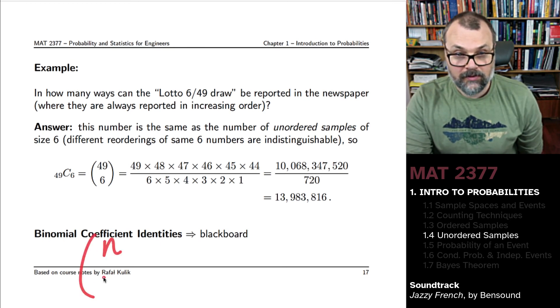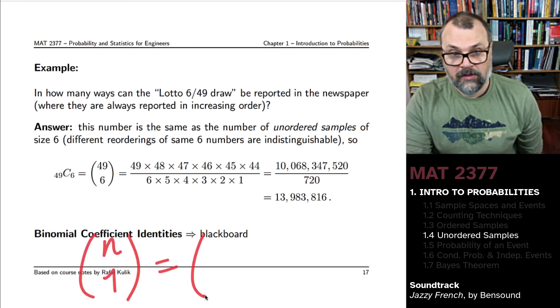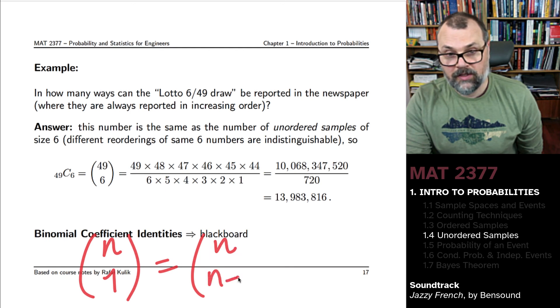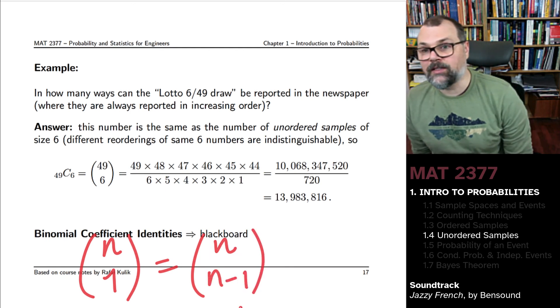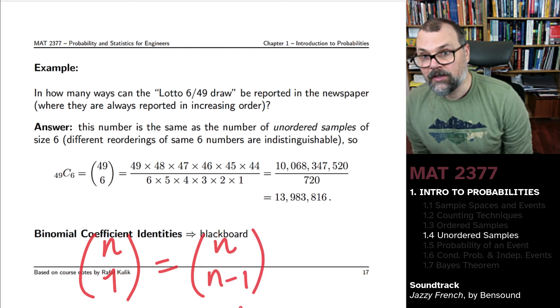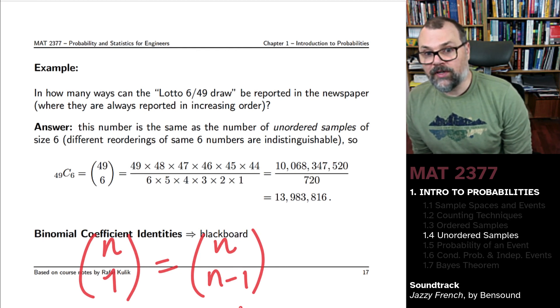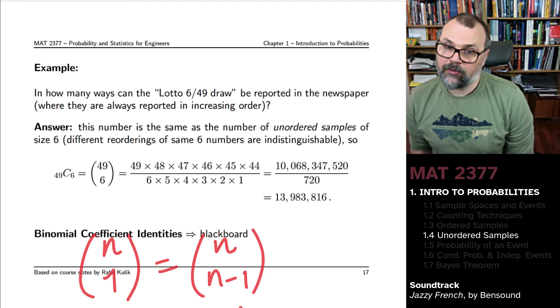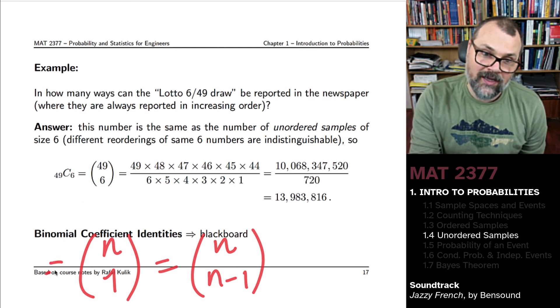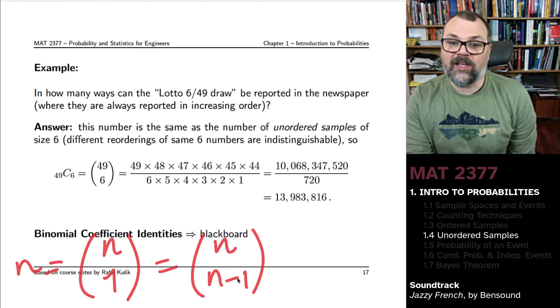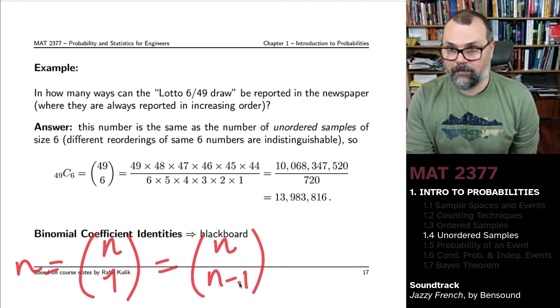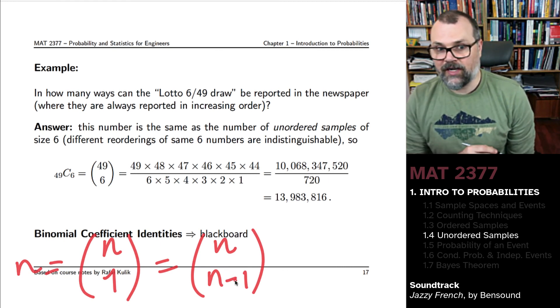Because this is basically saying that you want to find the ways not to pick an item from a list of n items.